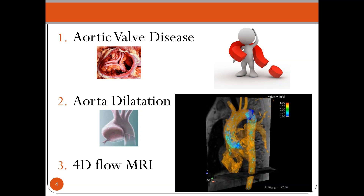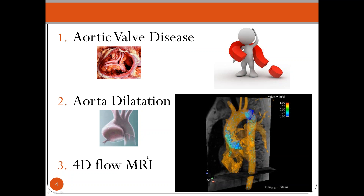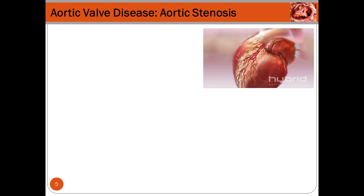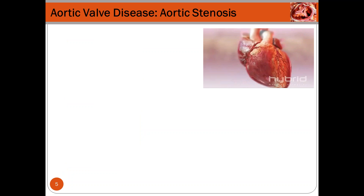This is a nice example and video of a healthy control acquired with 4D flow MRI and the visualization that we can obtain. So we're going to talk first about aortic valve disease.